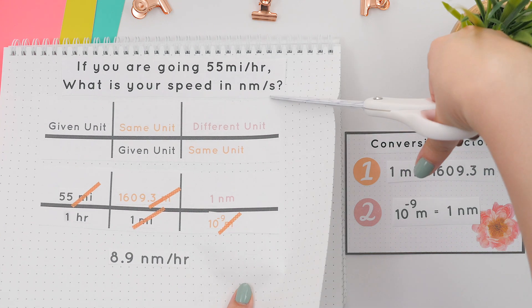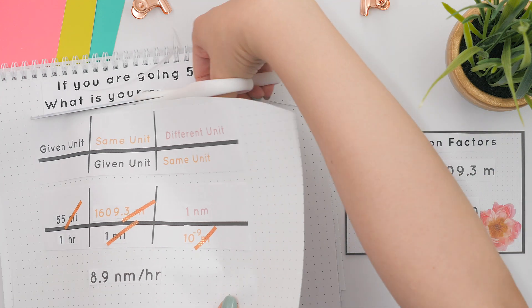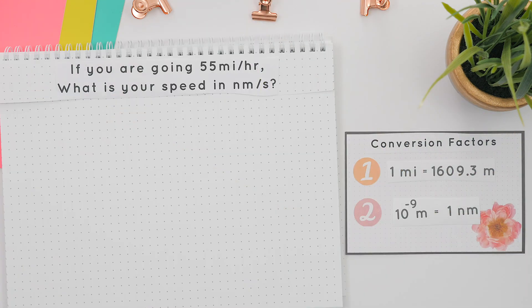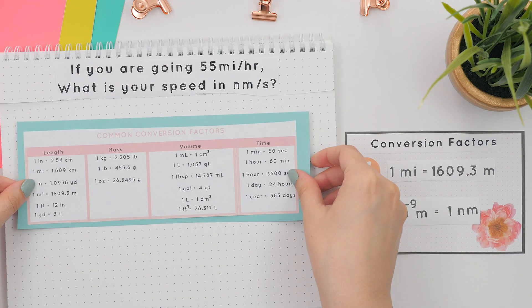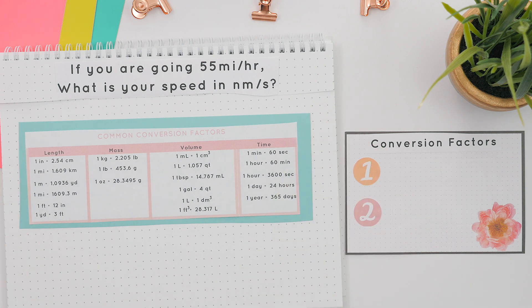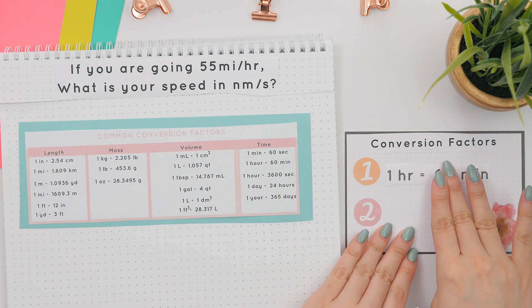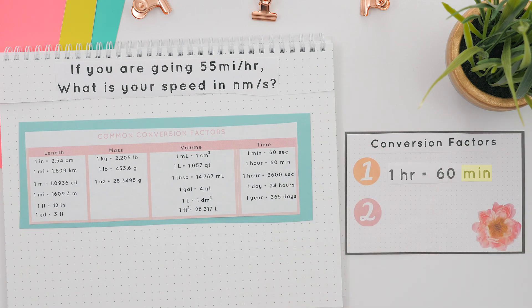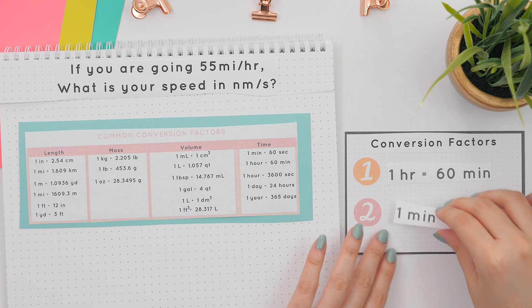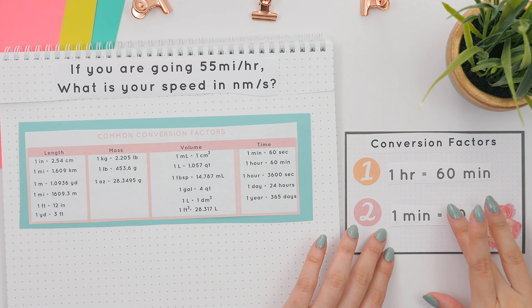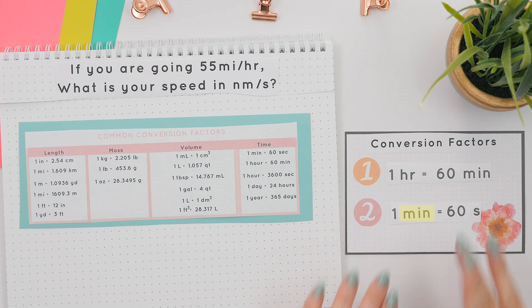So step two is to convert the hours on the bottom to seconds. Let's pick our conversion factors. The first conversion factor will have hours in it, and that will allow us to get to minutes. The second conversion factor will have minutes in it, and that allows us to get to seconds.